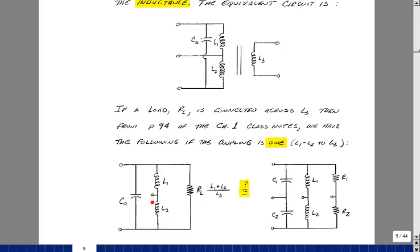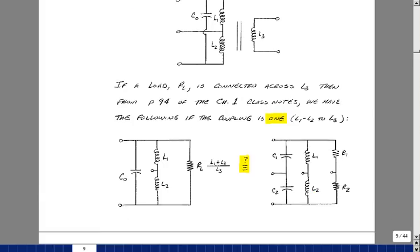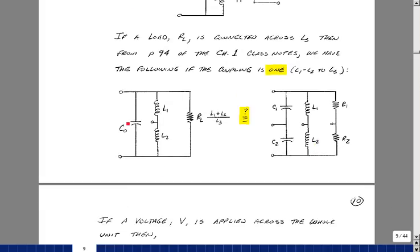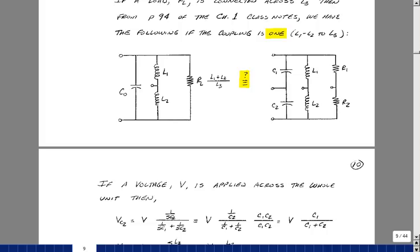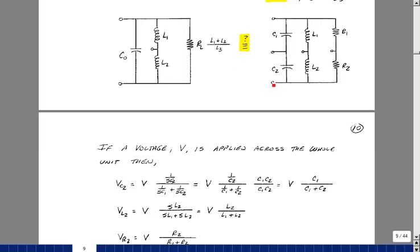And so we're going to get the ratio of L1 plus L2 over L3. And again, the derivation of this is on page 94 of our chapter 1 class notes. Now, is it possible to express this as an equivalent of two series capacitances and two series resistances in parallel with the two inductances L1 and L2? This would be a representation of what this is doing. We could do that if we set up the following relationship. Suppose that there is a voltage across this proposed equivalent circuit. We call it V. Then there's a voltage divider here with SC2 and SC1, which is to say 1 over that for the impedance.